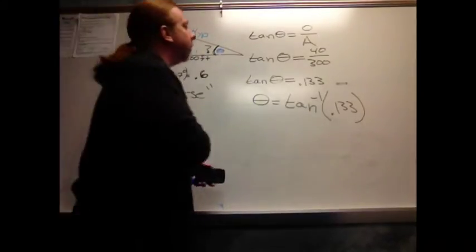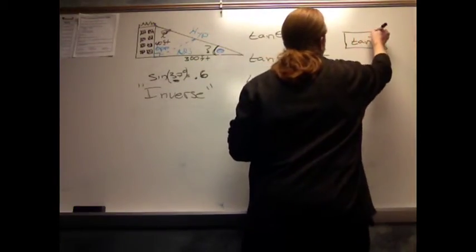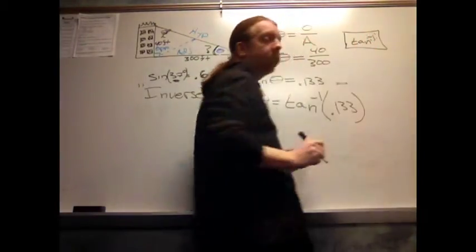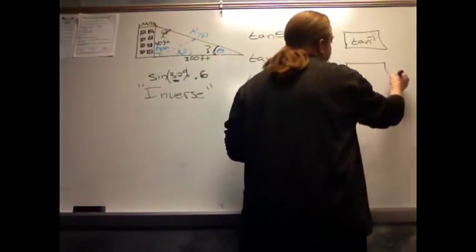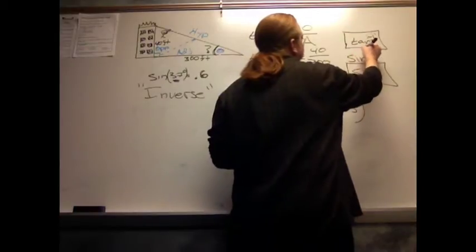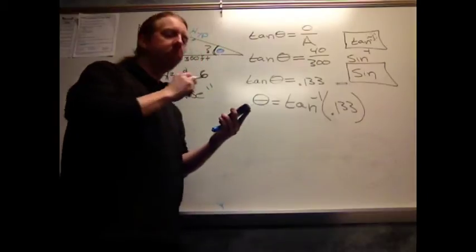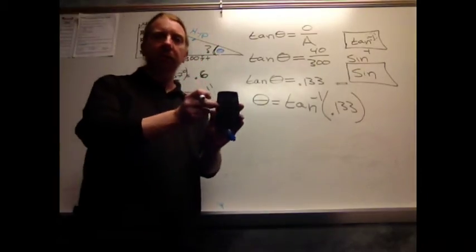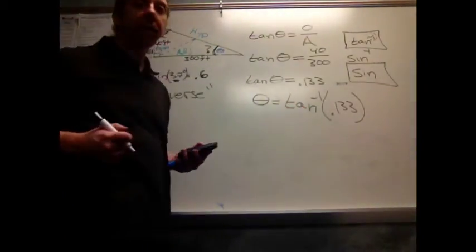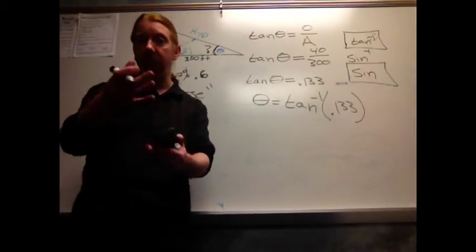Now, on a calculator, I want to look for a button that looks like tan with a negative 1 in it. Now, what I probably will see on my calculator, I will see a button that says something like sine, and above it, it will say sine to the negative 1. That's my calculator's way of putting more buttons on here. So I have to use this little second function button to access that upper level. Every calculator is different. We'll figure out how your calculator works when the time comes.